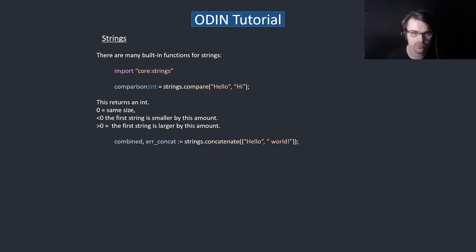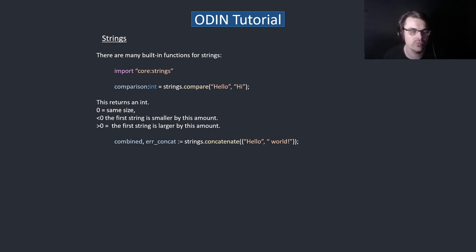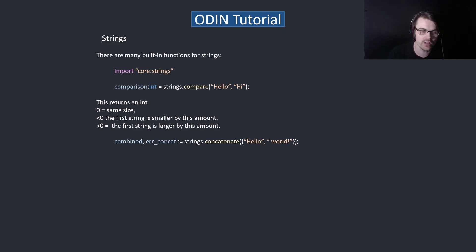There's a concatenate function which will join two strings together. However, this requires me to explain multiple return types. You can basically have multiple return types in Odin. Instead of an error union like in Zig, it uses multiple return types and returns an integer as an error if there could be an error. So the return value is basically the return string, and the second value is the integer which could be an error.